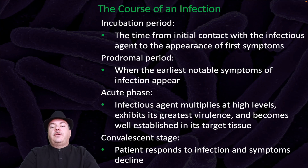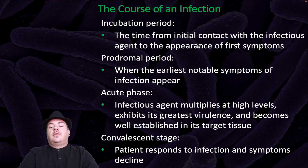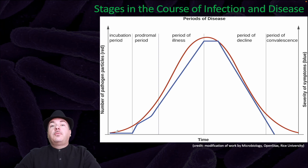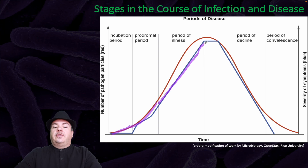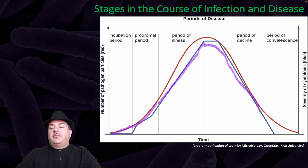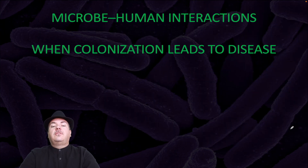The course of infection includes the incubation period, prodromal period, acute phase, and convalescent stage. The incubation period is the time from initial contact with the infectious agent to the appearance of the first symptoms. The prodromal period is when the earliest notable symptoms appear. During the acute phase, the infectious agent multiplies at high levels, exhibits its greatest virulence, and becomes well established in its target tissues. The convalescent stage is where the patient responds to infection and symptoms decline. We start with the incubation period — few pathogens and minimal symptoms — leading to the prodromal period with an increase in both, then the period of illness with significant pathogen numbers and severe symptoms, followed by a period of decline, and finally convalescence.